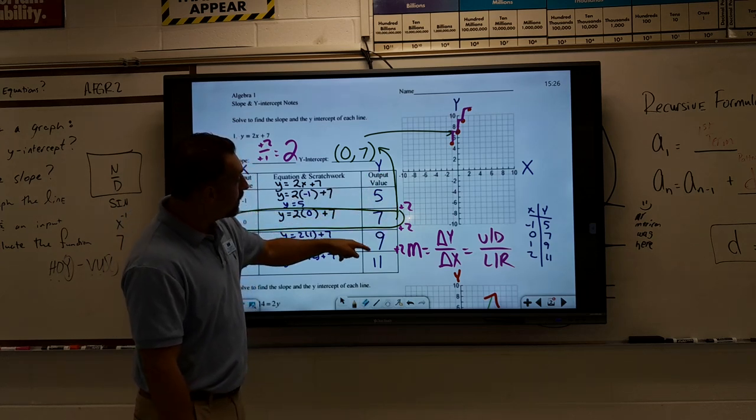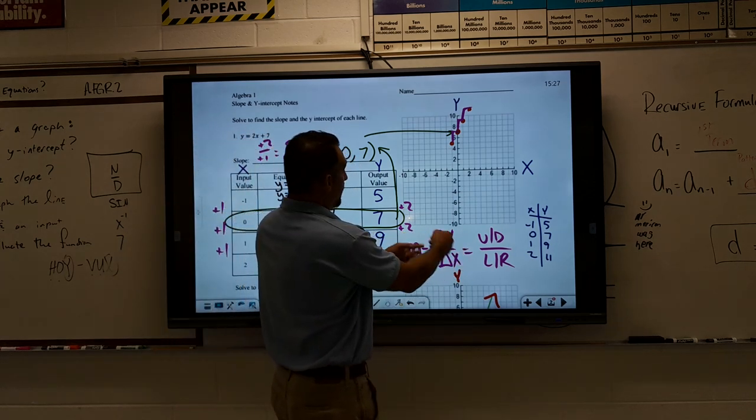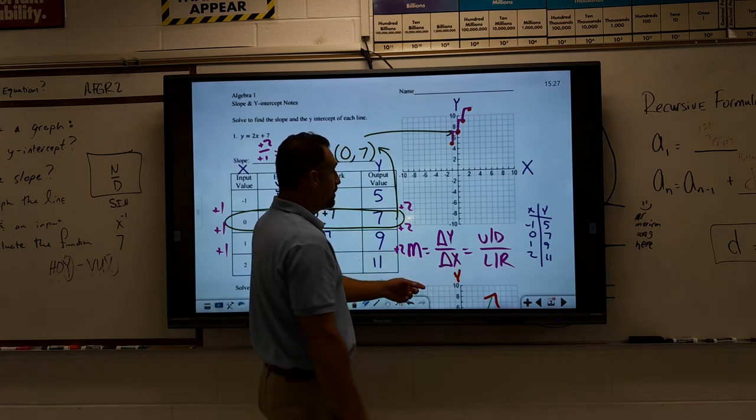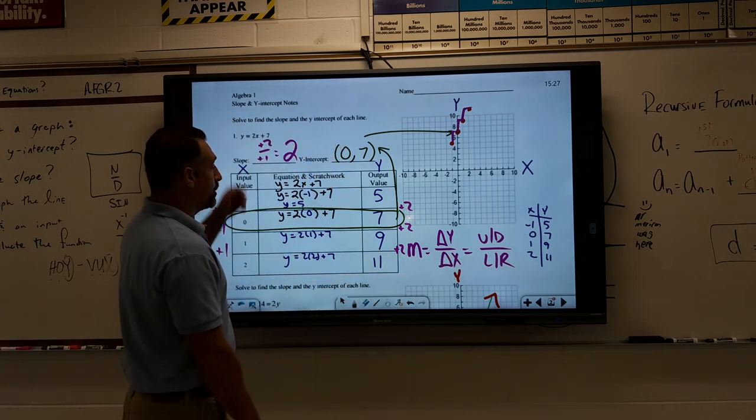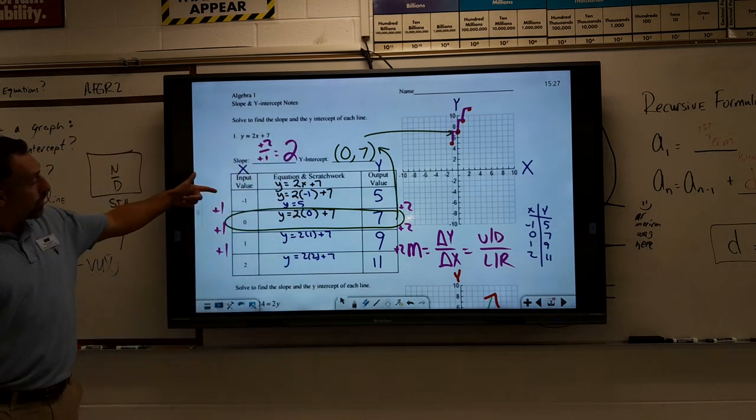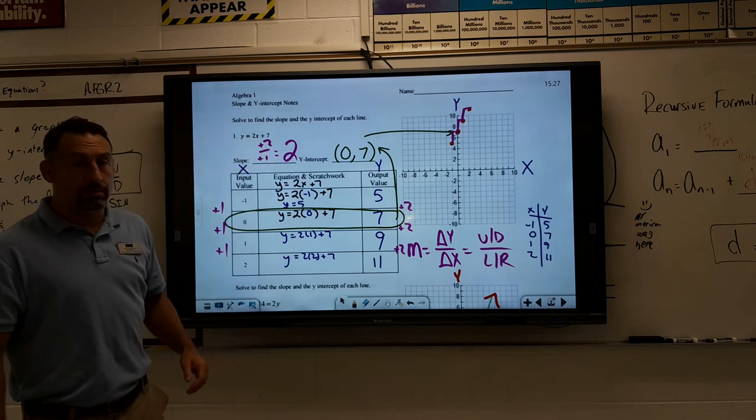5, 7, 9, 11. When determining the slope, that common difference in the y values over the common difference in the x values gives you the slope. The y's are going up by 2, and the x values are increasing by 1. So that's 2 over 1, or 2, and that's the slope.